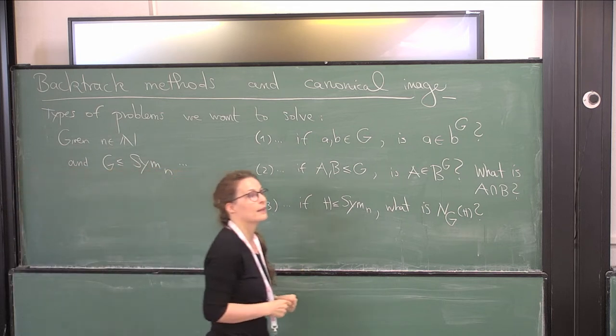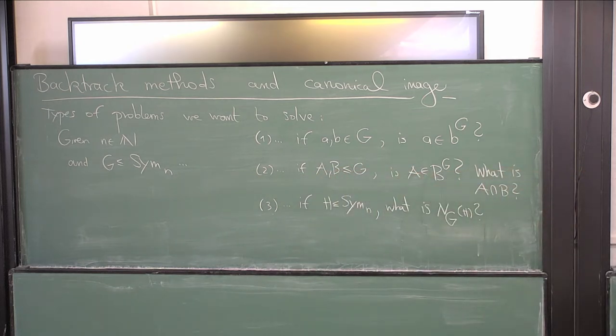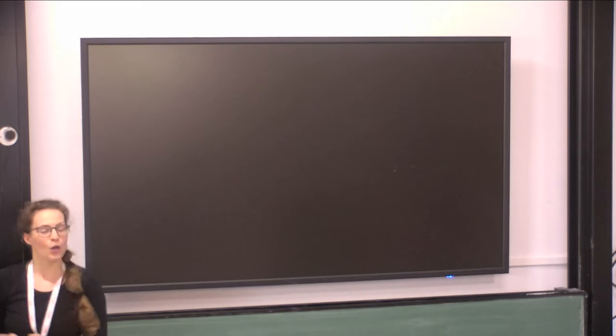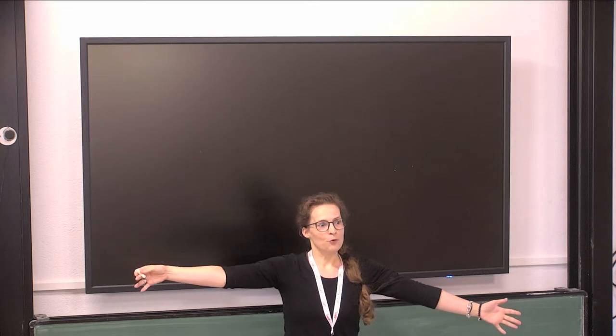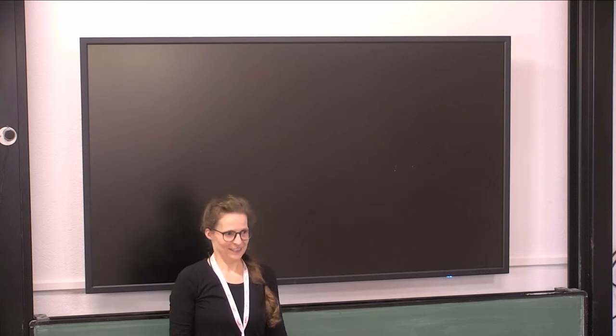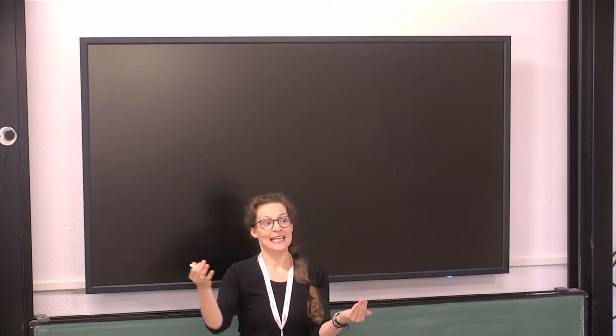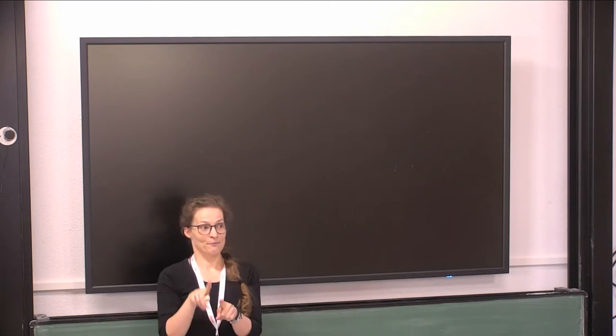If we start searching naively, what could we do? If we have two subgroups and want the intersection, we could look at all elements in the big group and do membership testing for the two subgroups. But that means looking at all elements in the big group, and that's stupid. If we know the group orders, we can take the smaller group and only check those elements for membership in the other one — that seems smaller.